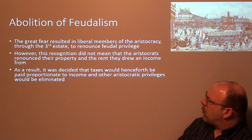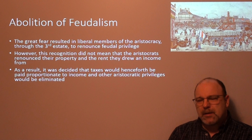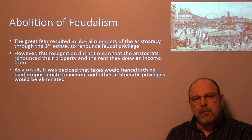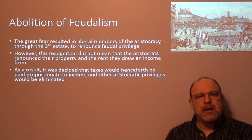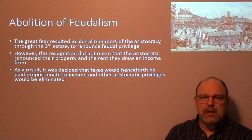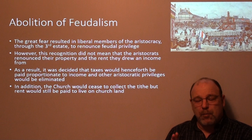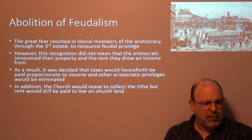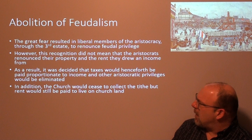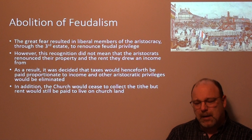As a result, it was decided that taxes would henceforth be paid proportionate to income, and other aristocratic privileges would be eliminated. The nobility would now have to pay taxes, with the amount determined by income. In addition, the church would cease to collect the tithe — which may have been around 10 percent of income — but rent would still be paid to live on church land.